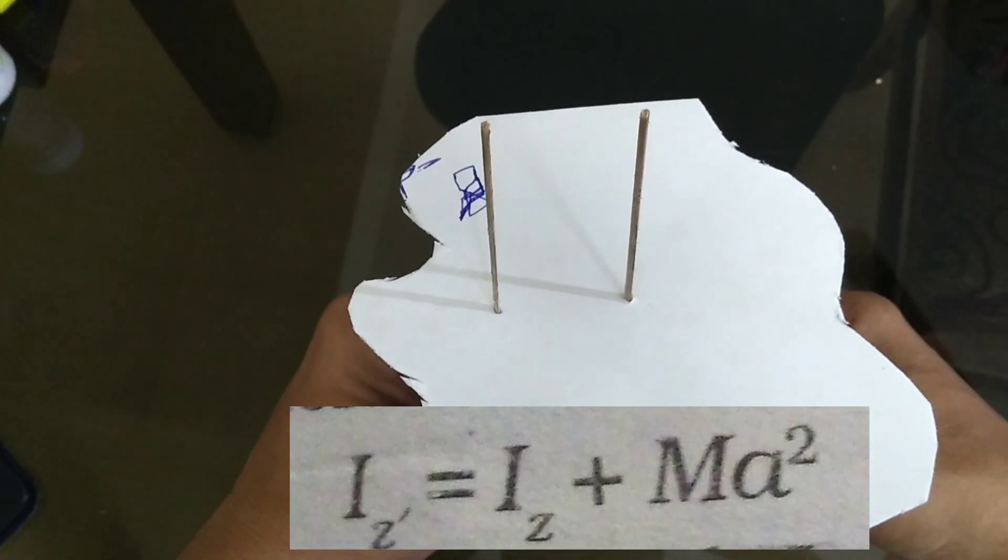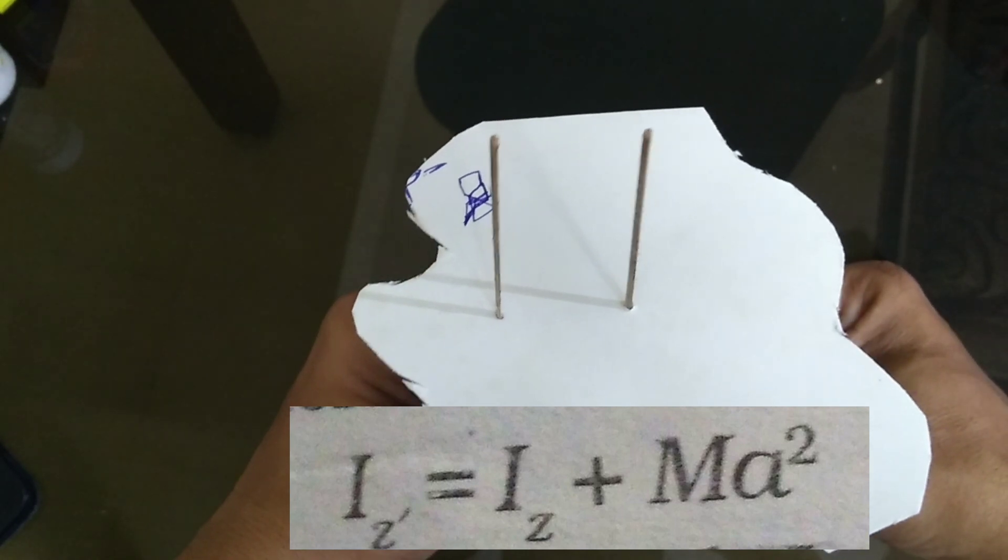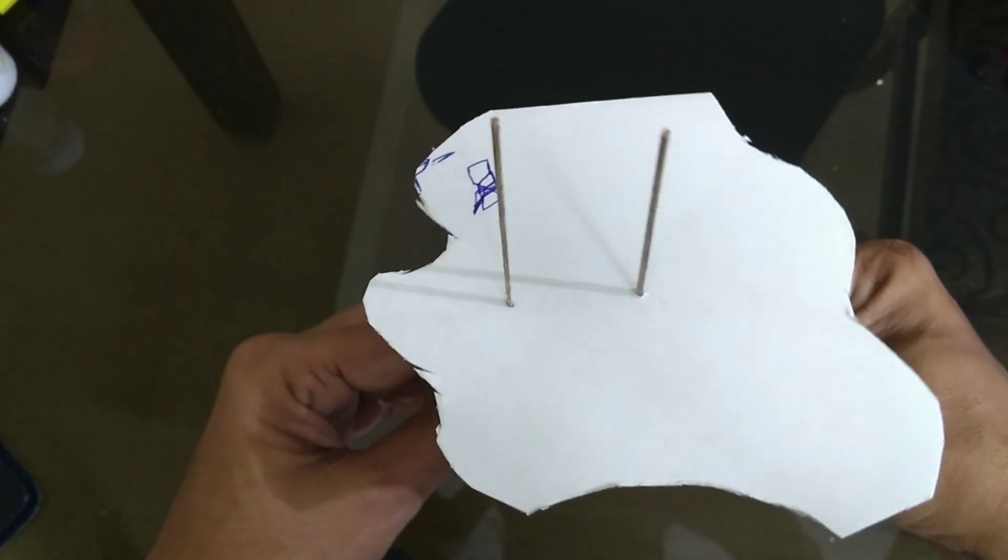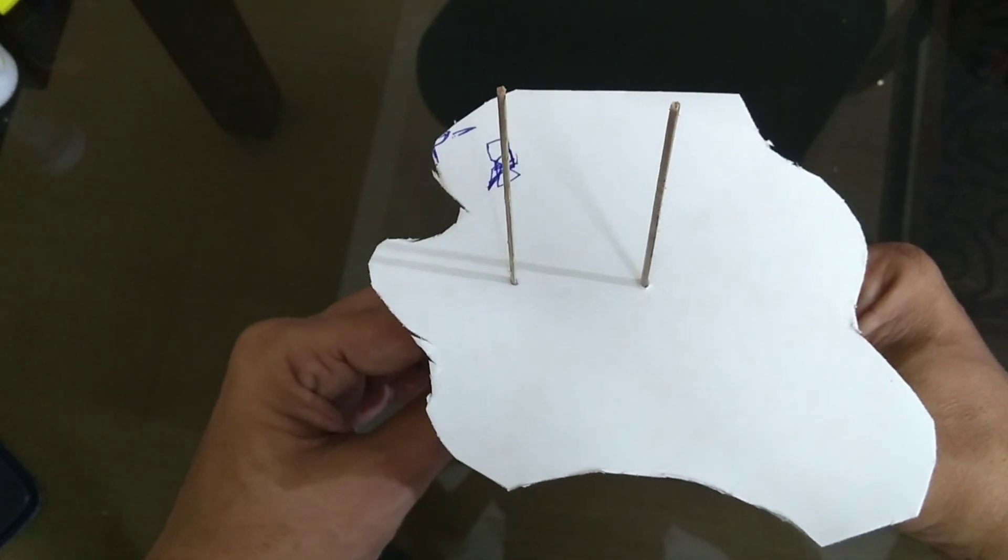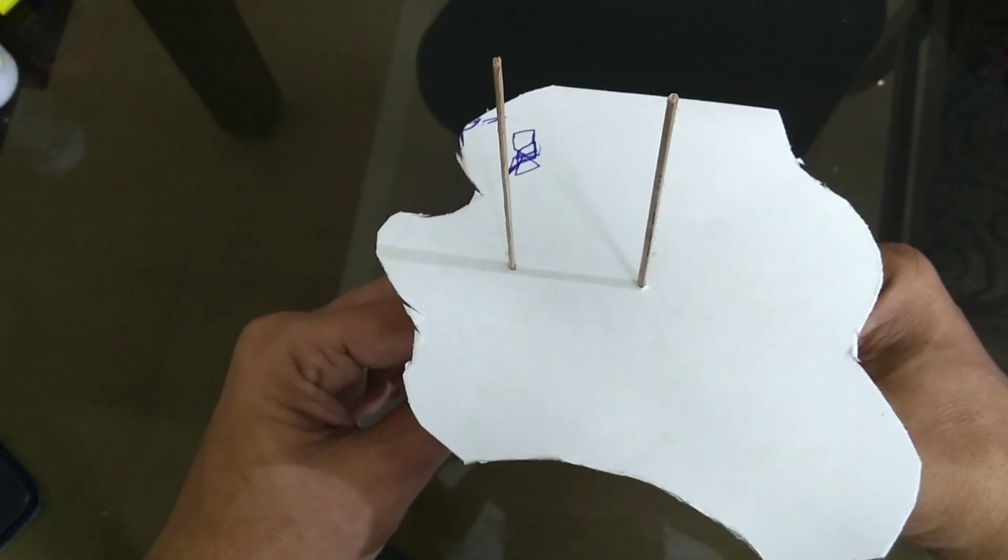According to parallel axis theorem, IZ prime equals IZ plus m alpha square. This is called parallel axis theorem. Thanks for watching.